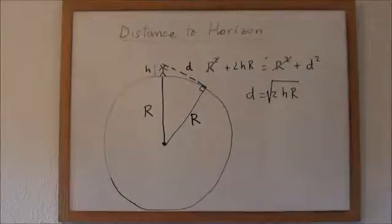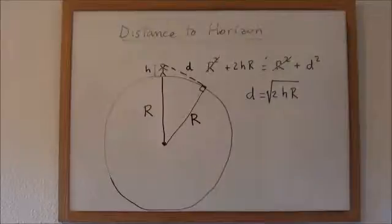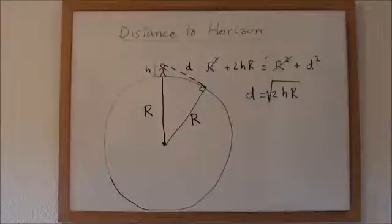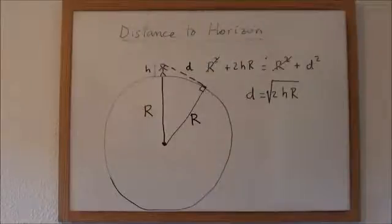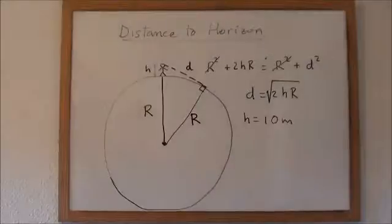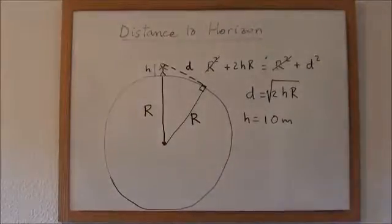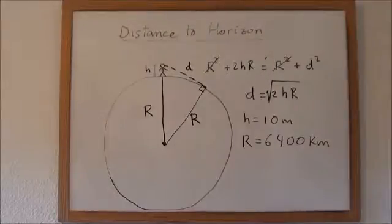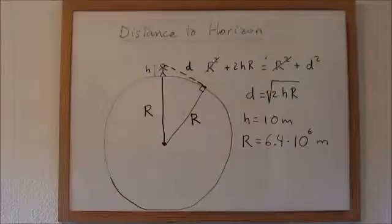Let's apply this to an example. Let's say we are on a ship, and h, the height, that means taking into account the height of the ship over the surface of the water, plus our height, could be 10 meters. Let's say 10 meters. That is quite a normal situation. And the radius of the earth is, more or less, 6400 kilometers. That is 6.4 times 10 to the 6th meters.